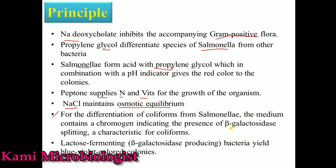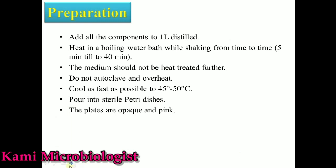This media also contains chromogens. We can differentiate coliforms from Salmonella due to the presence of beta-glycosidase, which can split the coliform bacteria and reveal the characteristics of different coliform bacteria. Lactose is mostly not present in this media, but if lactose is present, the bacteria will produce blue to violet color colonies.